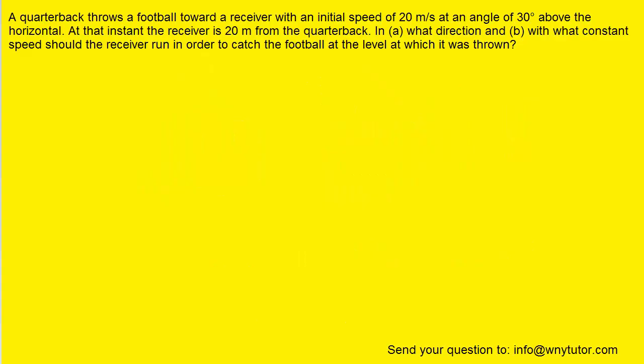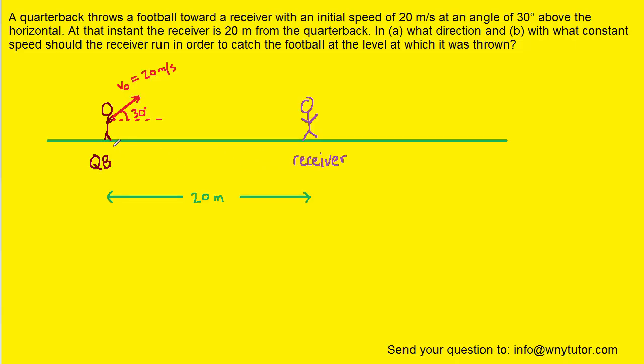If you haven't done so yet, please pause the video and try to answer the question on your own before listening on. What we'll do first is draw a picture that represents the situation being described. So here we have the quarterback throwing the football at an initial speed of 20 meters per second at an angle of 30 degrees above the horizontal. And then in purple we have the receiver.